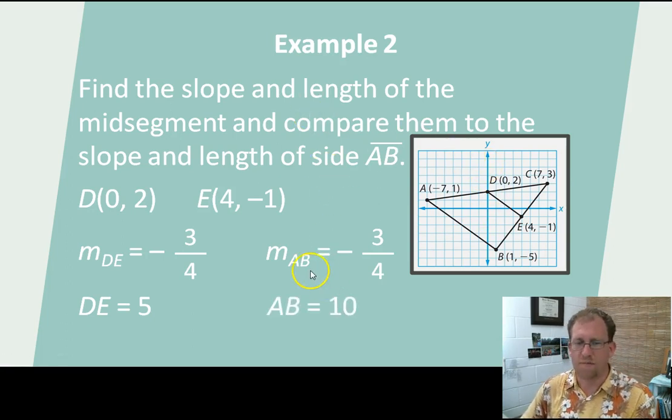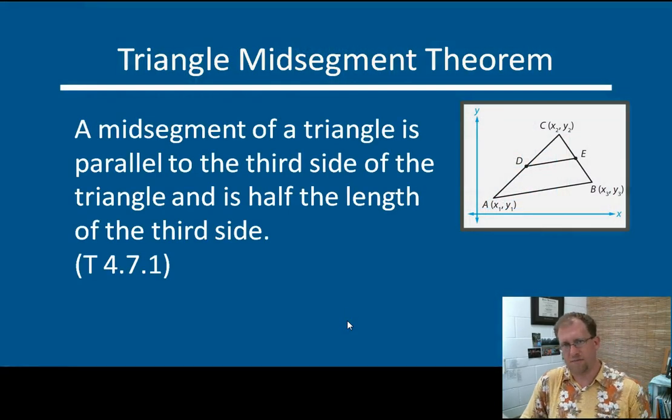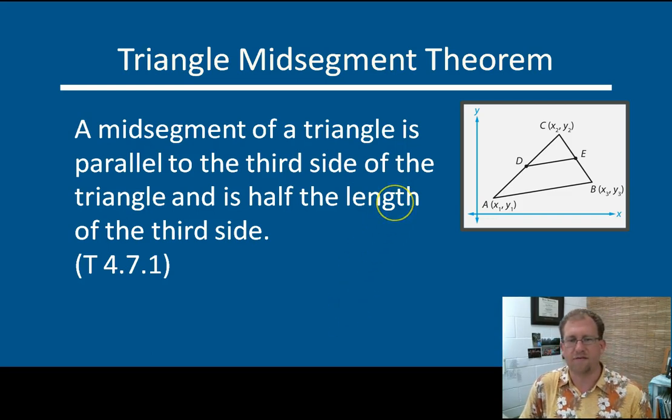Mid-segments are always parallel to and half the length of the side that they don't intersect with of the triangle. That just demonstrated this mid-segment theorem. A mid-segment of a triangle is parallel to the third side of the triangle and it's half the length of the third side. Always, all the time. If you can determine that these are bisected lines and that this is the midpoint of these segments, then you can determine that this is half the length and parallel to the third side of the triangle. Kind of a neat little tool to have in your bag.